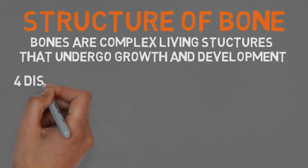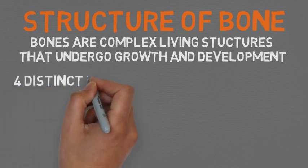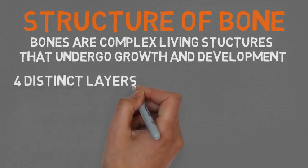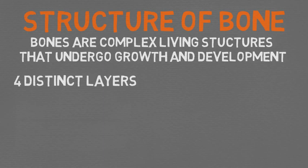Next, we'll look at the structure of bone. Bones are complex living structures that undergo growth and development. They contain four distinct layers, each playing a different role in protection or cell production. The structure of bone makes it both strong and lightweight, making up 20% of an adult's body weight. Bone is made up of two minerals: calcium and phosphorus.